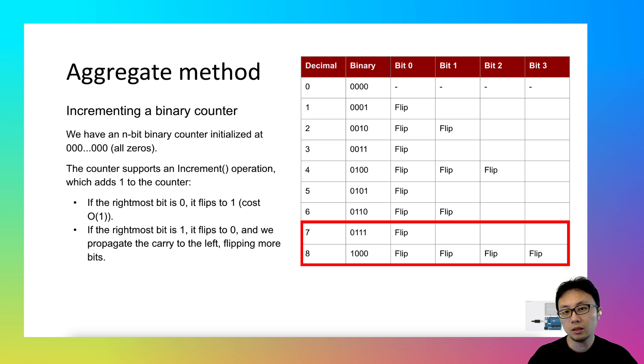In row number 7, all bits are 1, except for the leftmost one. When the increment operation is executed, the rightmost bit will flip, and the carry will flip all other bits. That's how you go from row number 7 to row number 8.